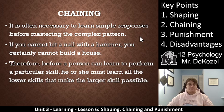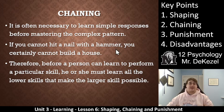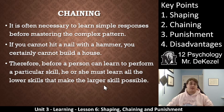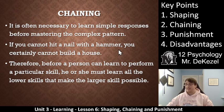It is often necessary to learn simple responses before you master the complex pattern. So you learn the breathing part, the arm part, the leg part, and then you put a couple of them together, then you optimize, and before you know it you've learned how to do them all together at the same time. If you cannot hit a nail with a hammer, you certainly cannot build a house. You need to chain all these things together — learn how to hit a nail with a hammer, learn how to build a frame, and so on. A person must learn all the lower skills that make the larger skill possible. You must learn what a letter means before you can put it into a word, before you can put that word into a sentence, before you can put that sentence into a paragraph, into an essay, or a novel. You need to learn all the skills that go into that larger, more complex thing in a row. That's called chaining.